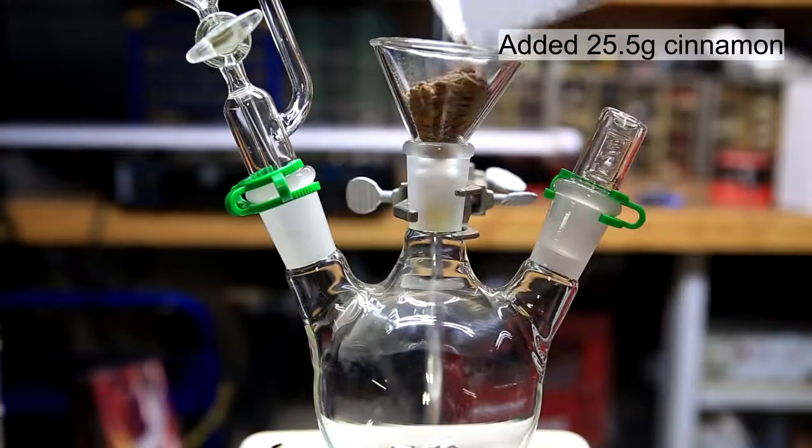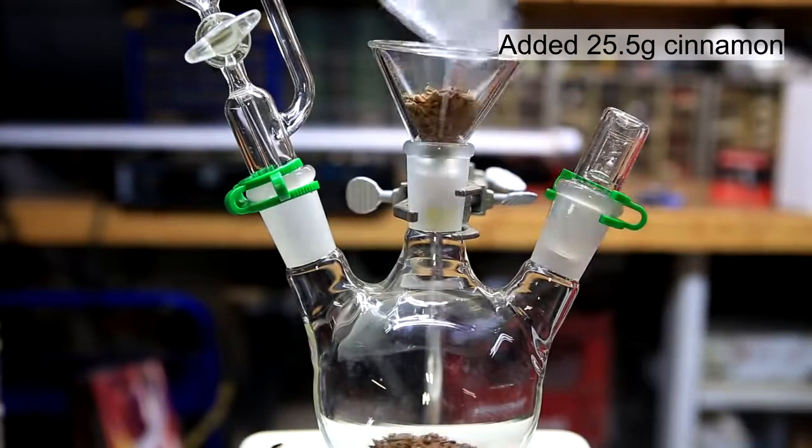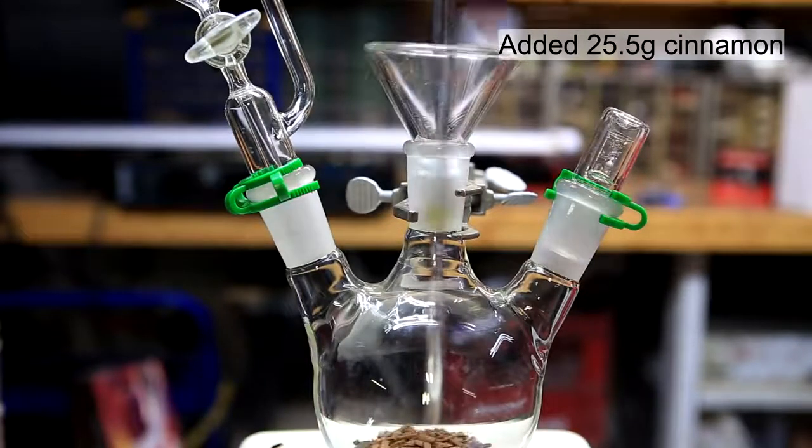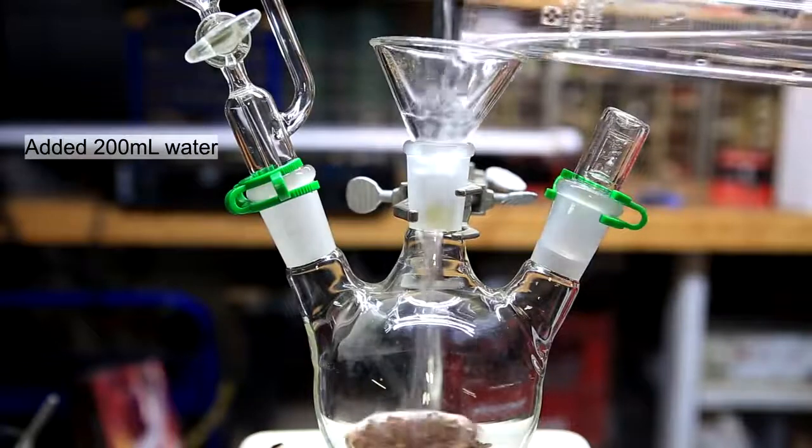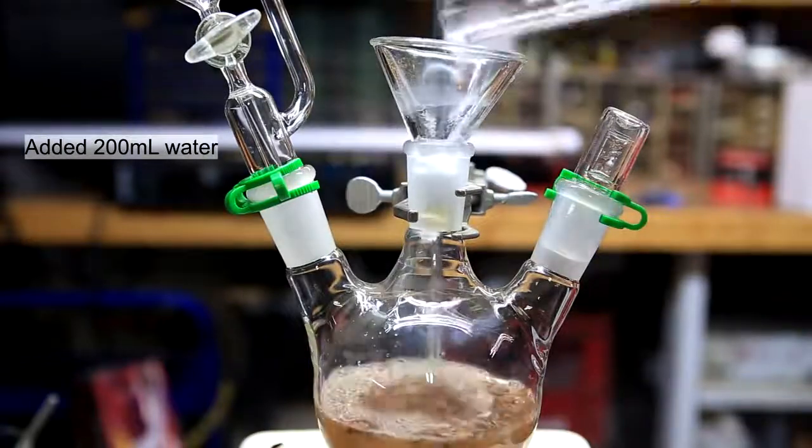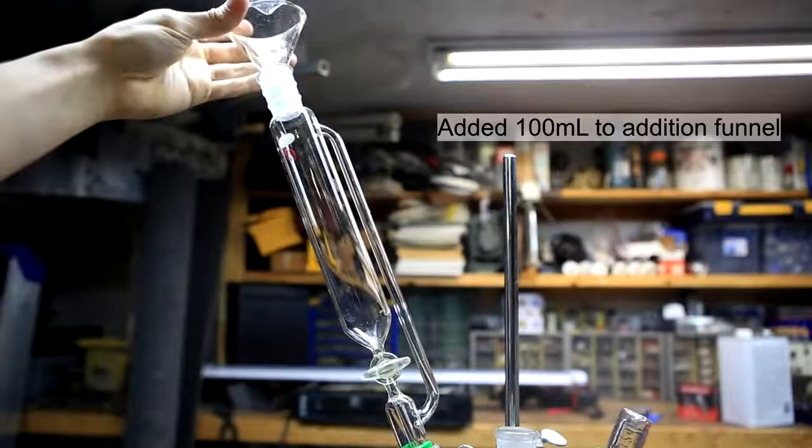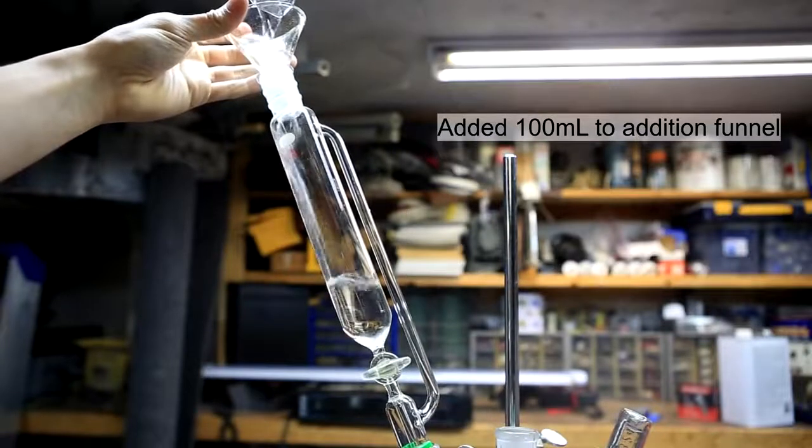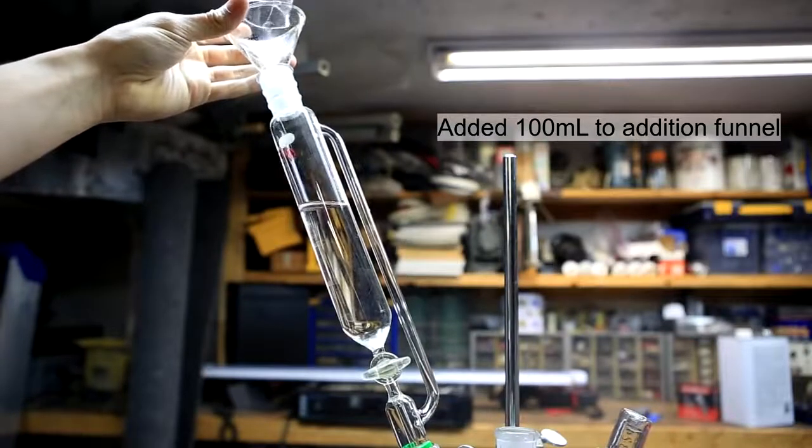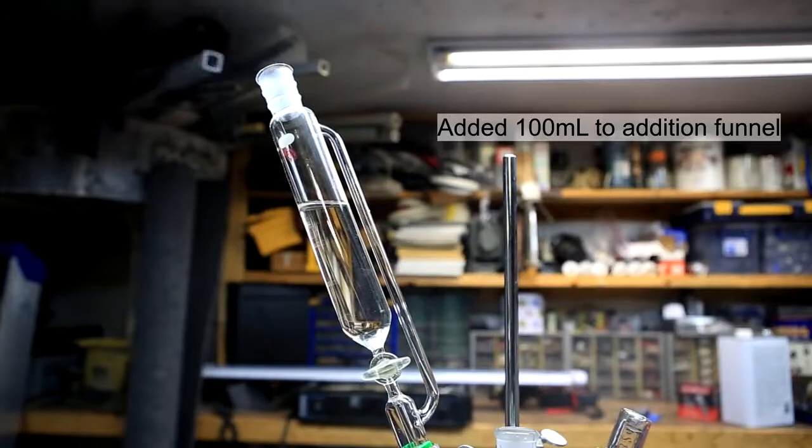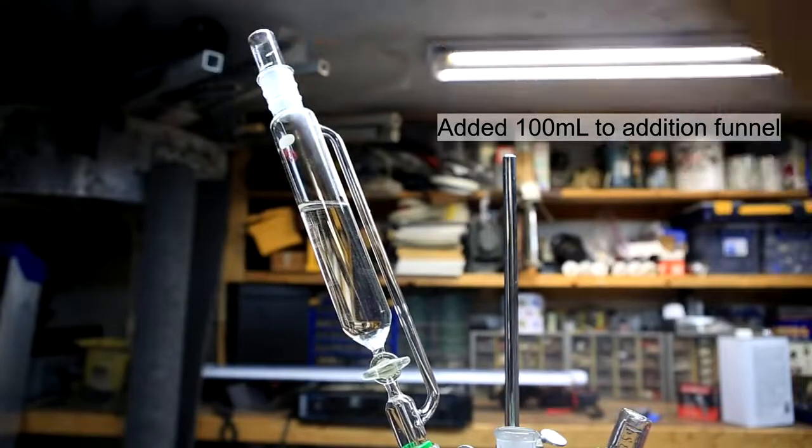After the cinnamon had been crushed, 25.5 grams were added to a three necked round bottom flask. To this was added 200 milliliters of distilled water. Then 100 milliliters of water was added to an addition funnel attached to one of the necks. However this extra 100 milliliters of water really isn't that necessary.